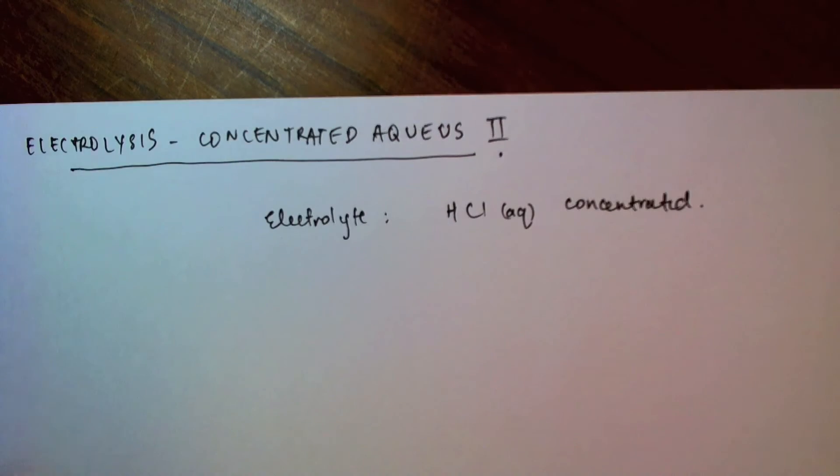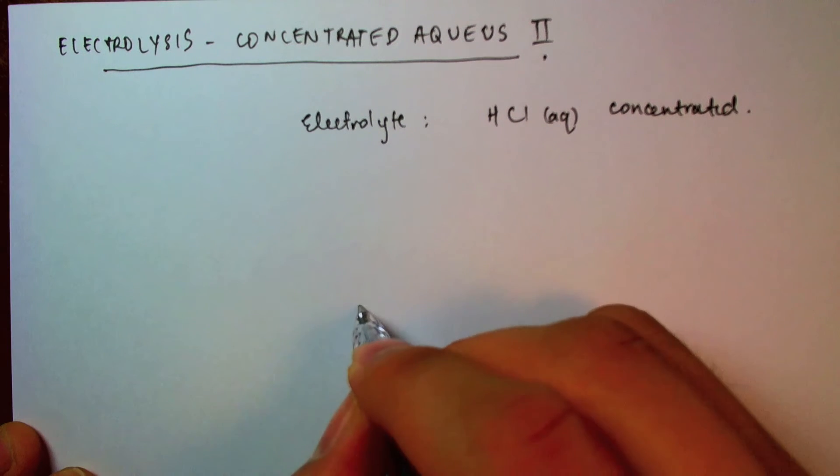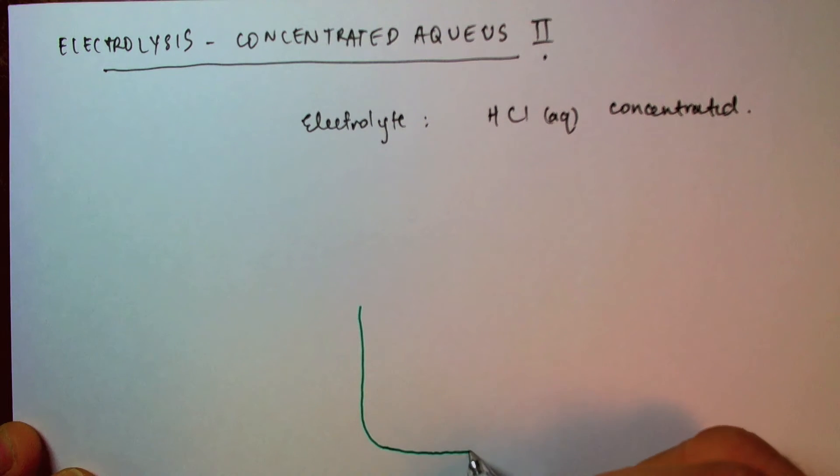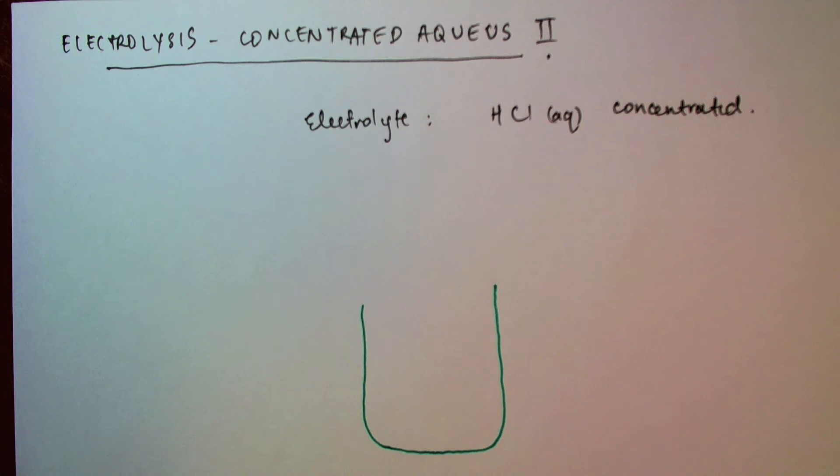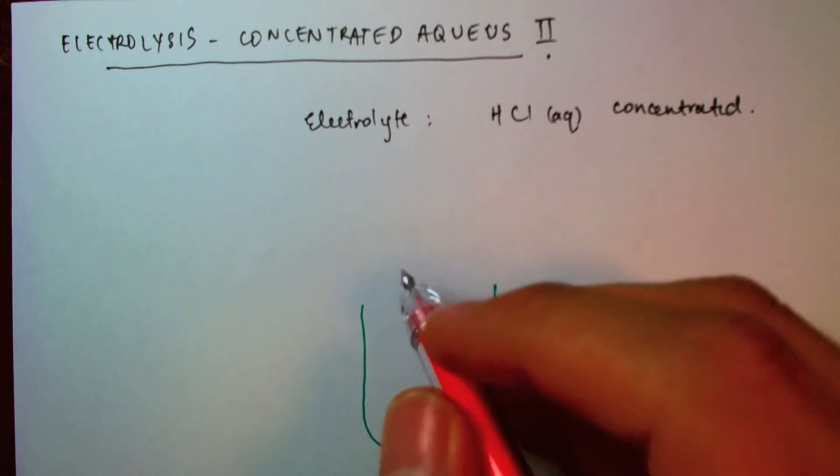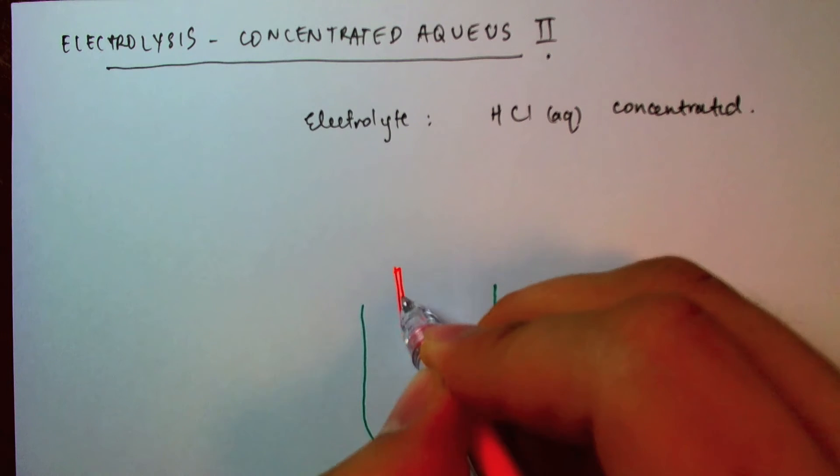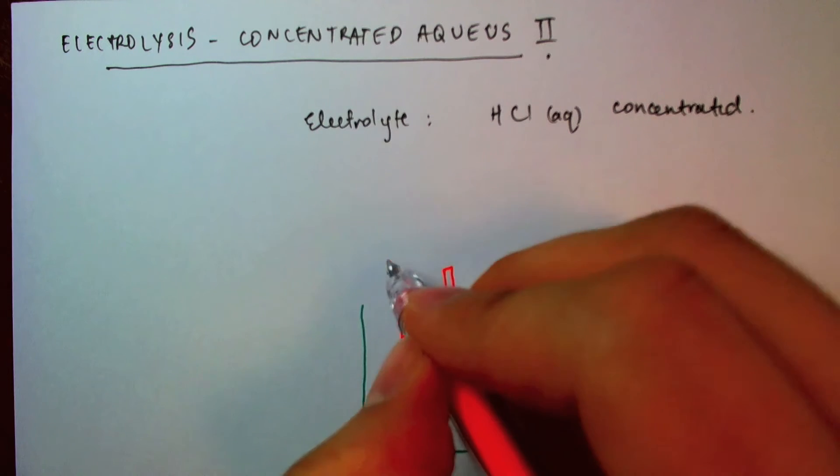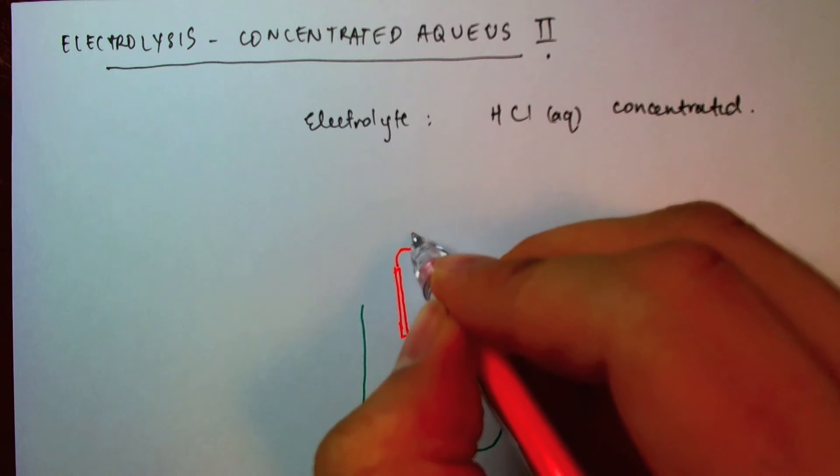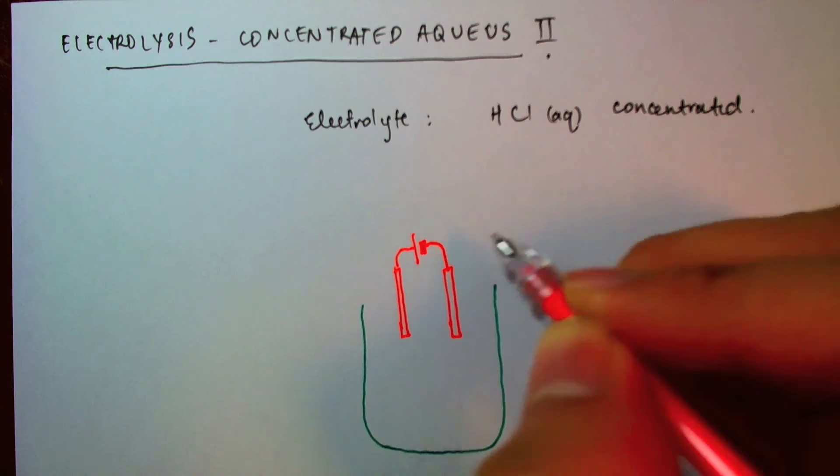So once again, I start with my container. And I will have my inert carbon electrodes, because we don't want it to react with the hydrogen chloride that would change the products of the electrolysis, connected to a cell.